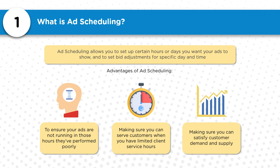Right out of the gate — what is ad scheduling? Ad scheduling is a feature in Google Ads that allows you, the advertiser, to set up certain hours or days you want your ads to show. For example, if you have a customer running ads for a restaurant and they're closed during certain hours of the week, you can go into the ad scheduler and schedule your ads to not show when they're closed.